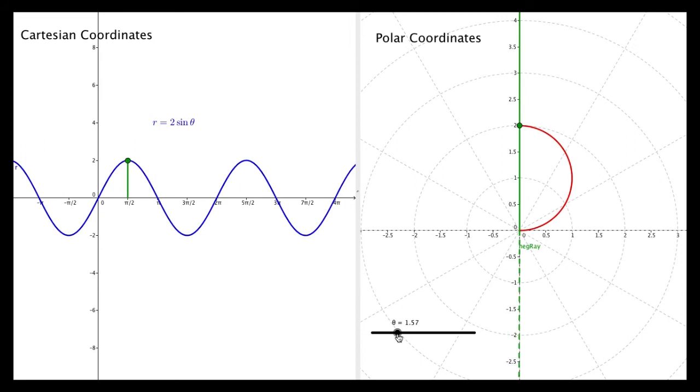We get to a maximum r value of 2. And then from the Cartesian graph on the left, we see that the r value starts to decrease until we hit a theta value of pi, where the r value is 0. And so that looks like a perfect circle.